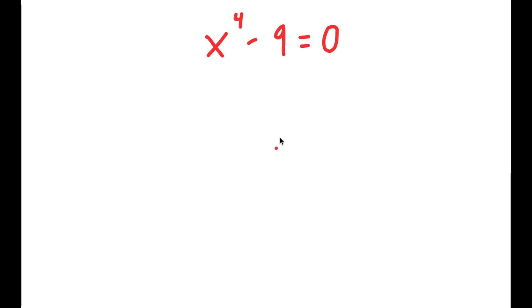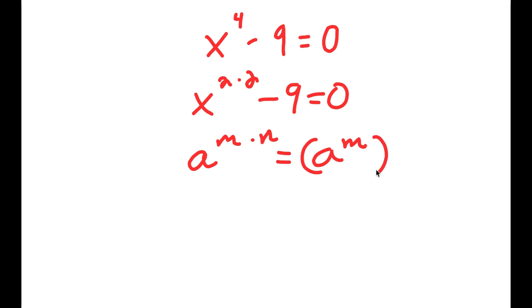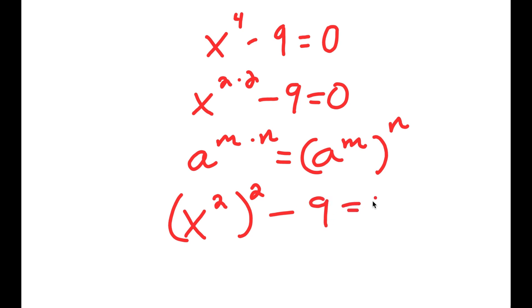In this problem, I have x to the power of 4 minus 9 is equal to 0. I'll start by rewriting x to the power of 4 as x to the power of 2 times 2. Using the rule that a to the power of m times n equals a to the power of m to the power of n, x to the power of 2 times 2 becomes x squared to the power of 2, minus 9 equals 0.